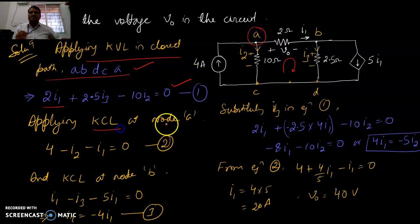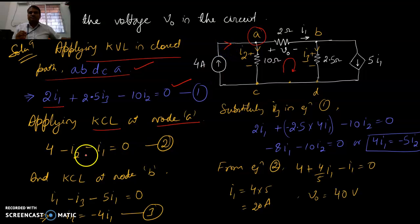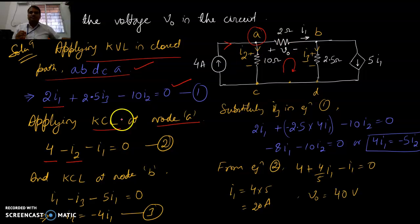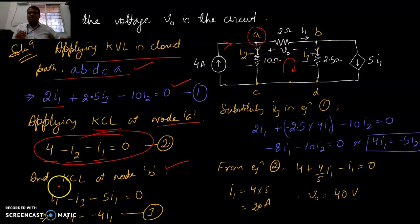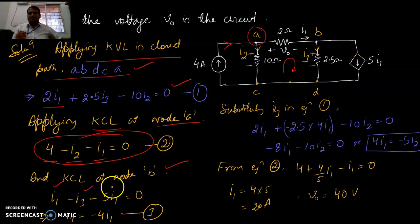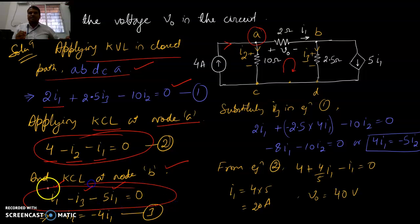At node A apply KCL: 4 is going in, I2 is going out (minus I2), I1 is going out (minus I1) — that is another equation. At node B: I1 is getting in (positive), I3 is coming out (negative), and 5I1 is coming out (negative) — giving another KCL equation.